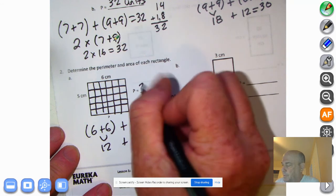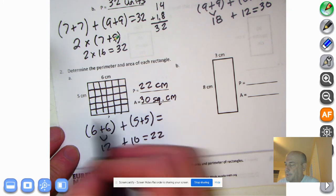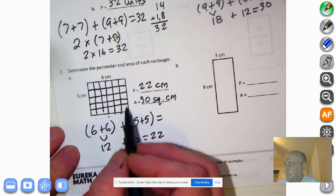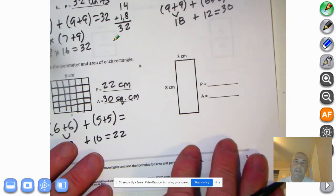So our perimeter is 22 centimeters. Not squared. Just 22 centimeters. I walk six. Then I walk five. Then I walk six. Then I walk five. It gets 22. Let's go to the next rectangle.